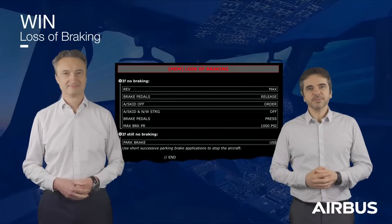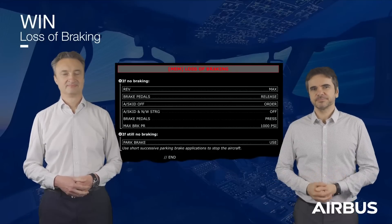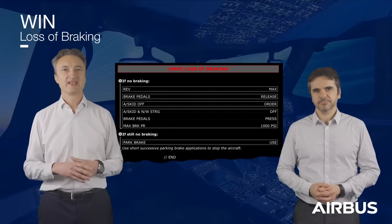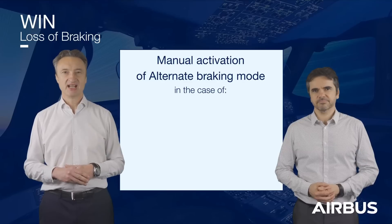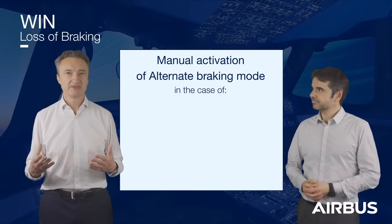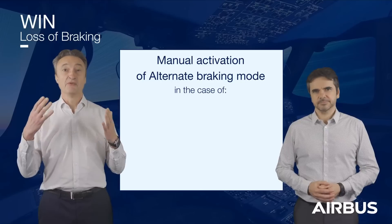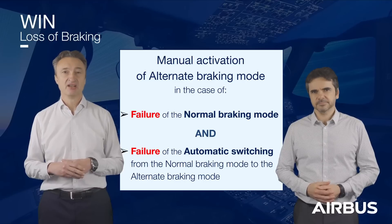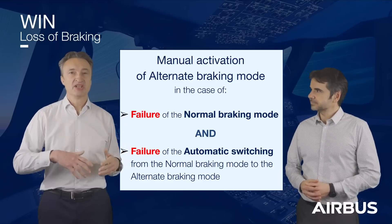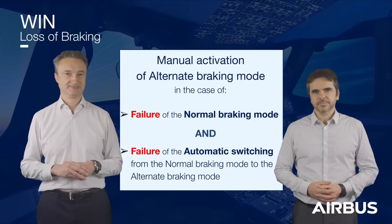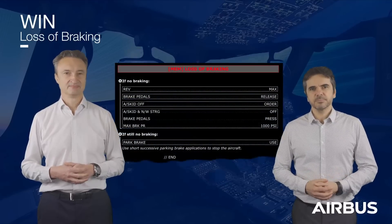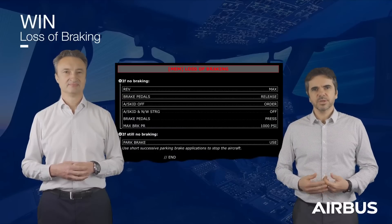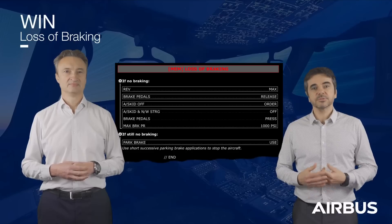Gilbert, what is the purpose of this procedure? The memory item procedure for the loss of braking enables the flight crew to manually activate the alternate braking mode without the anti-skid function, in the case of a failure of normal braking mode and a failure of the automatic switching from the normal braking mode to the alternate braking mode. Ultimately, if the alternate braking mode without anti-skid fails, the loss of braking procedure requests the use of the parking brake to stop the aircraft.